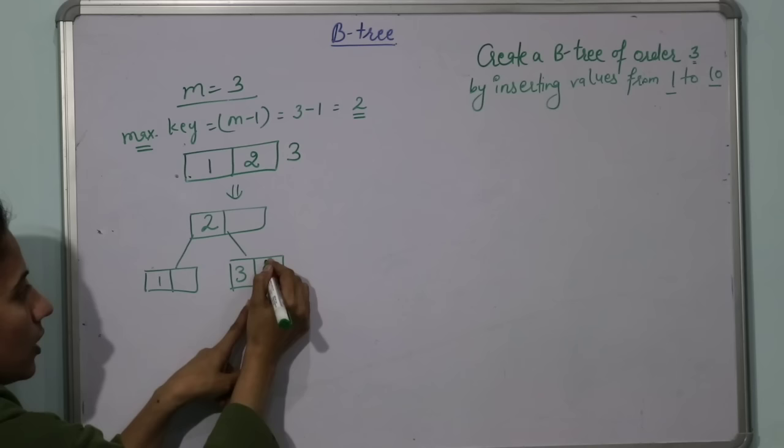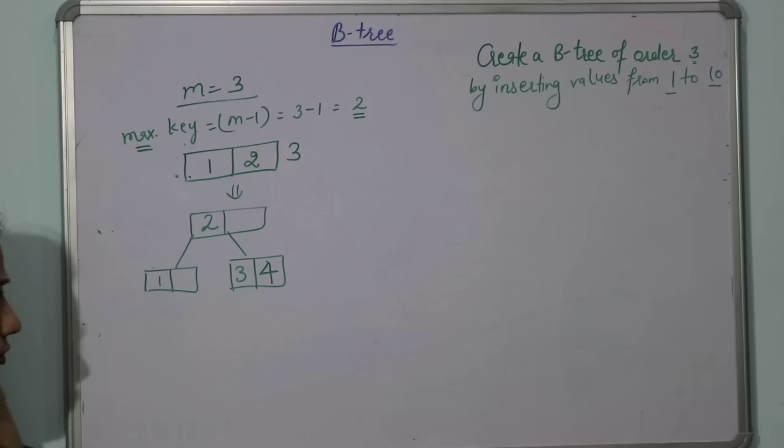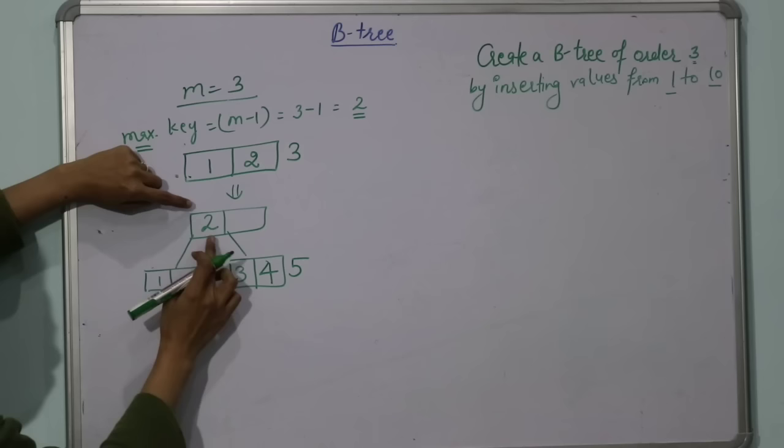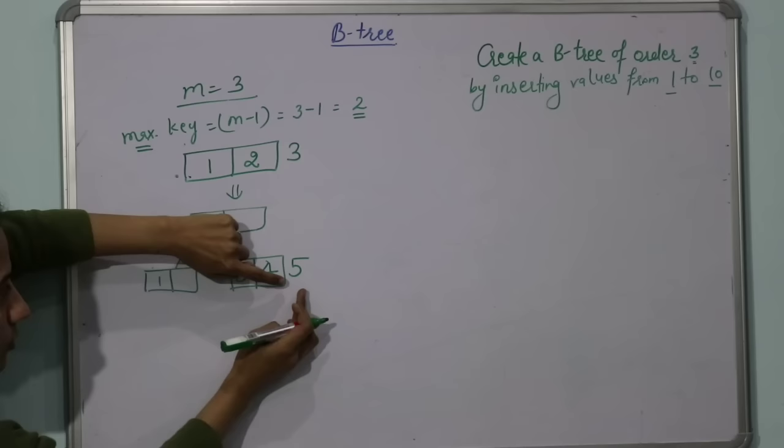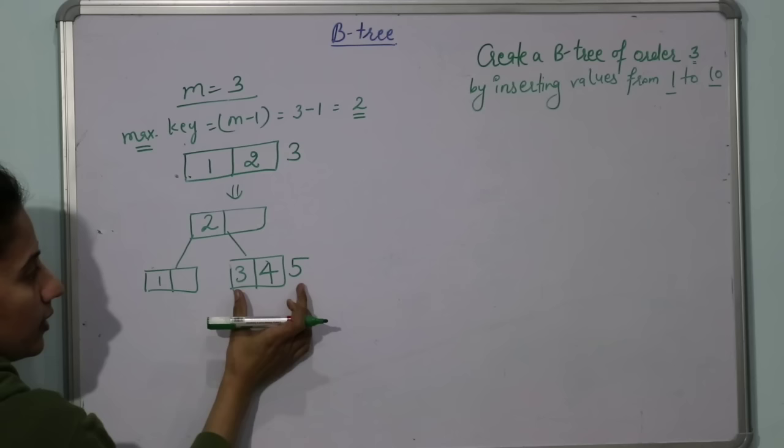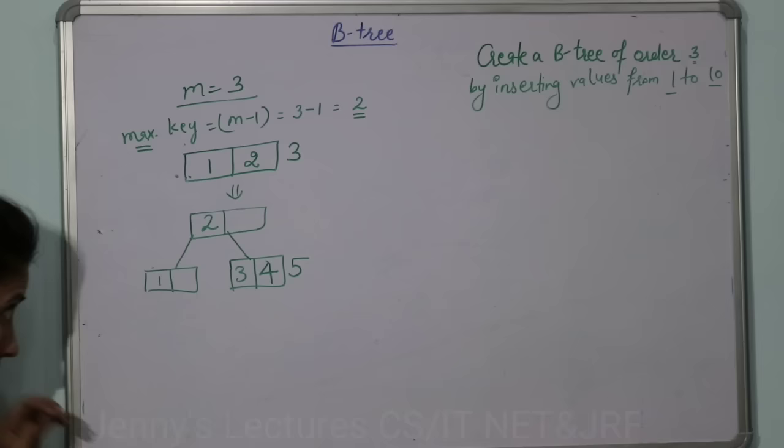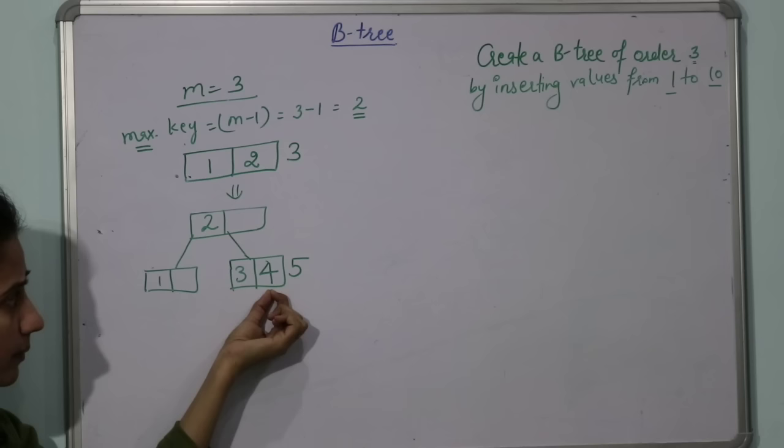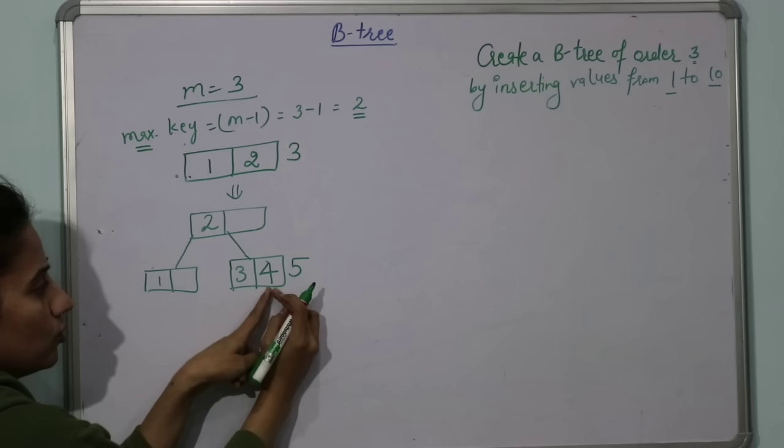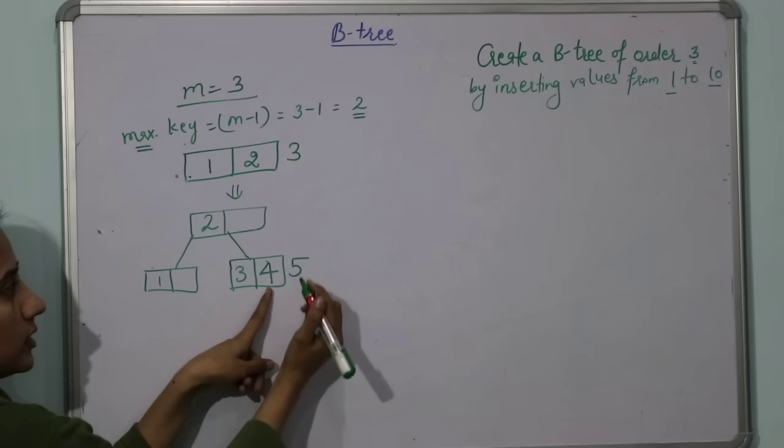Next value is 5. 5 is greater than 2, greater than 3, greater than 4, so 5 would come here. But maximum keys can be 2 and here we have 3 keys, so we have to split it. The median element is 4, and the median element or middle element would go one level up to the parent of this node. 4 goes here.